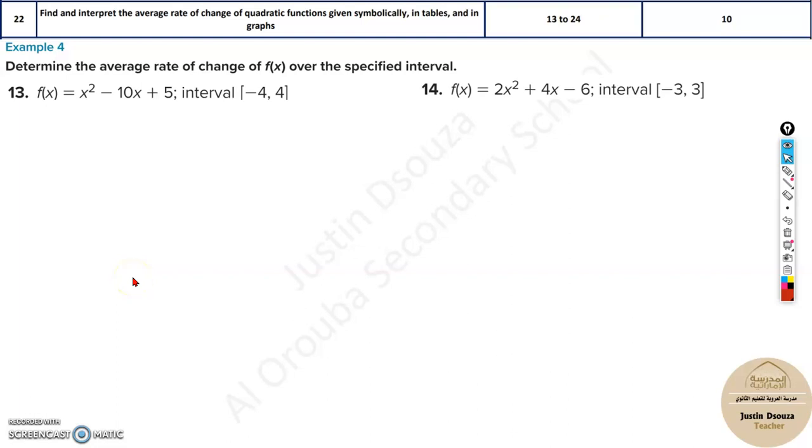The 22nd topic is to find the average rate of change of f(x) over a specified interval. This is a simple problem where you must just remember one formula. Once you remember the formula, you can easily solve it.